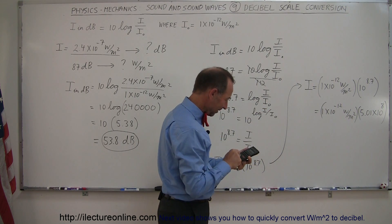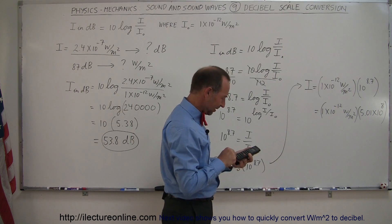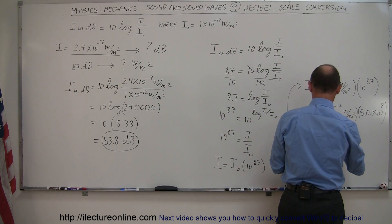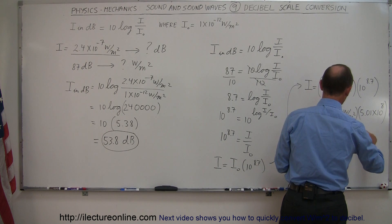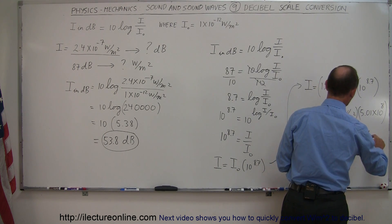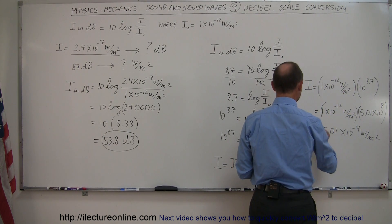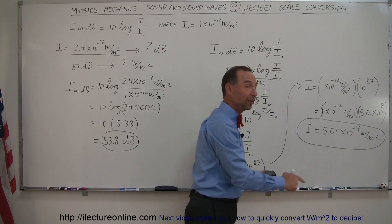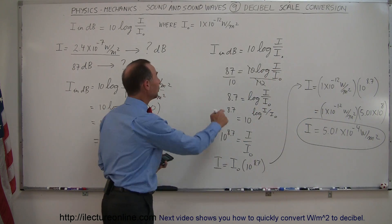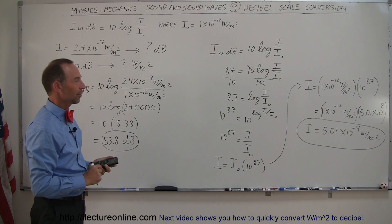So multiplying 1 × 10⁻¹² by 10 to the 8.7, this is equal to 5.01 times 10 to the minus 4 watts per square meter. And that, of course, is the intensity in watts per square meter equivalent to the 87 decibels of sound intensity that we're hearing.